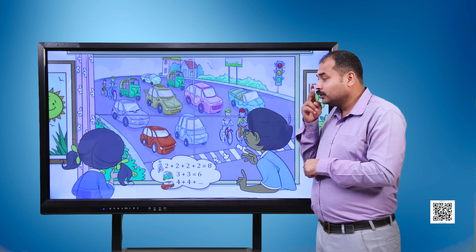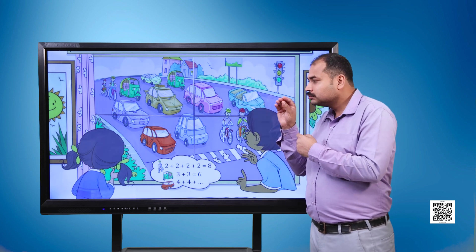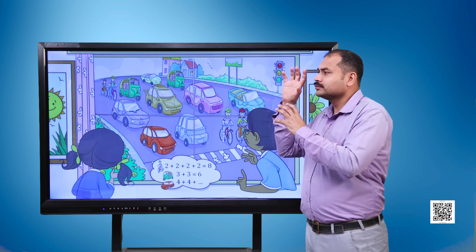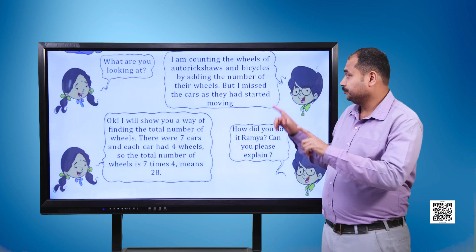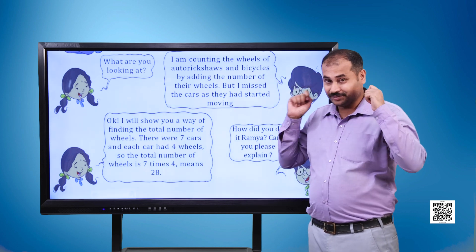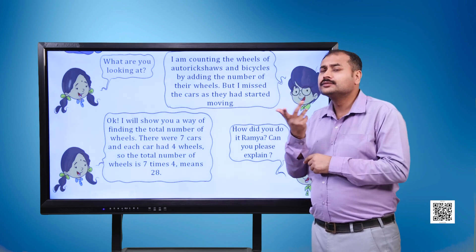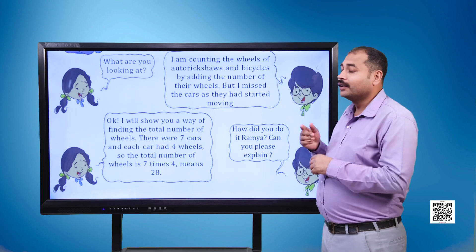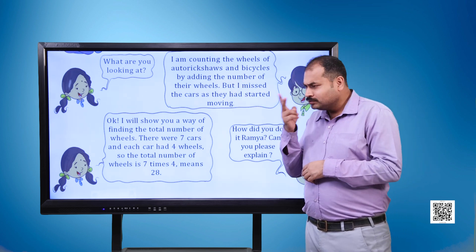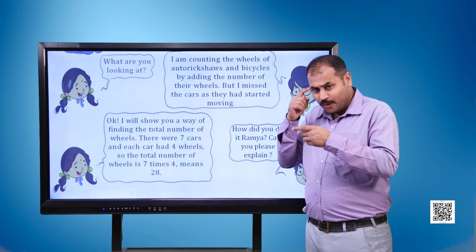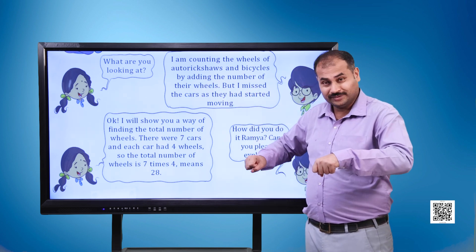They are counting wheels on cars: 4 plus 4 plus blank. The girl says, 'What are you looking at?' The boy says, 'I am counting the wheels of auto rickshaws and bicycles by adding the number of their wheels. But I missed the cars as they had started moving.'